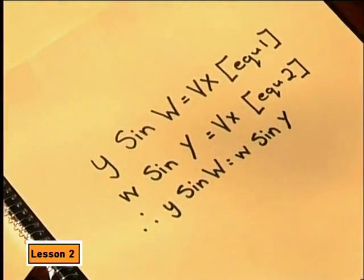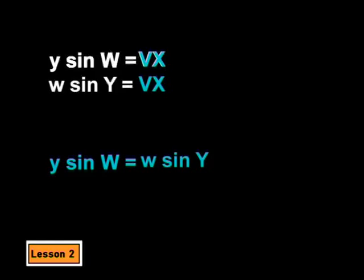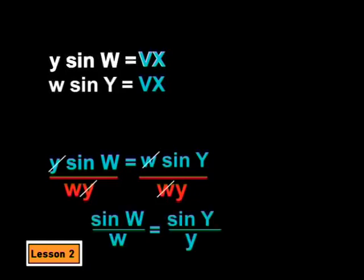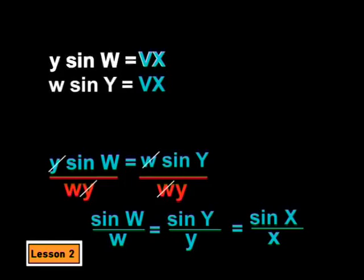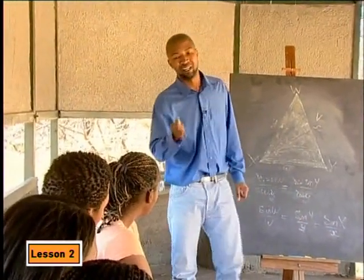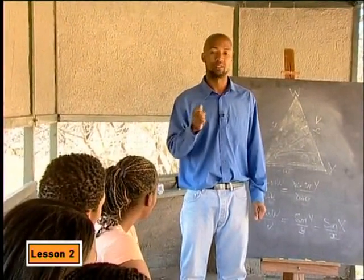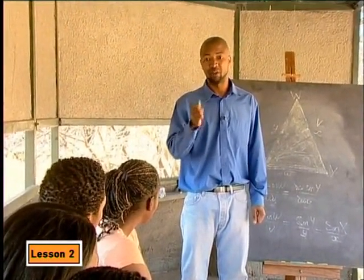But, how does that help us? That's very close to what we want. Look, divide both sides by w times y. Now, if we divide by w, y, we can cancel out the y's here and cancel out the w's here. And we get sine W divided by w, which is equal to sine Y divided by y. And that's it. We can easily do the same to show that sine X divided by x is the same as the two other ratios. So, we have shown that in any triangle, the sides are in proportion to the angles that are opposite them. And that is just another way of saying that the ratios are equal.